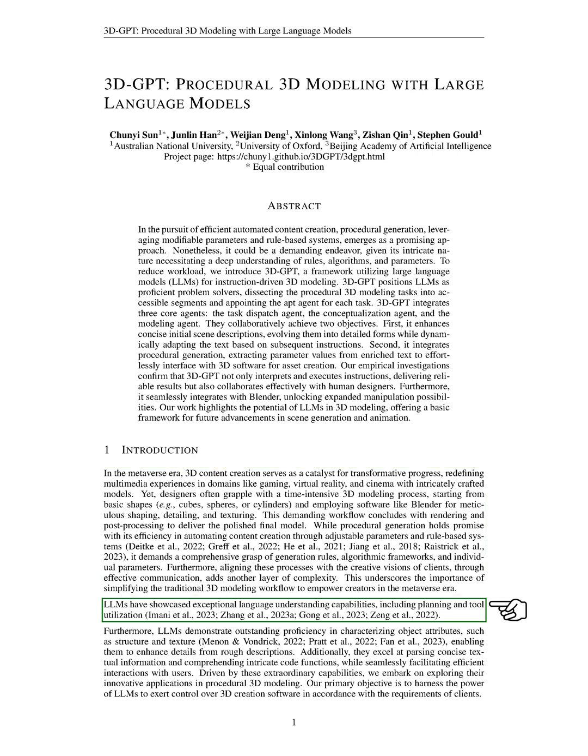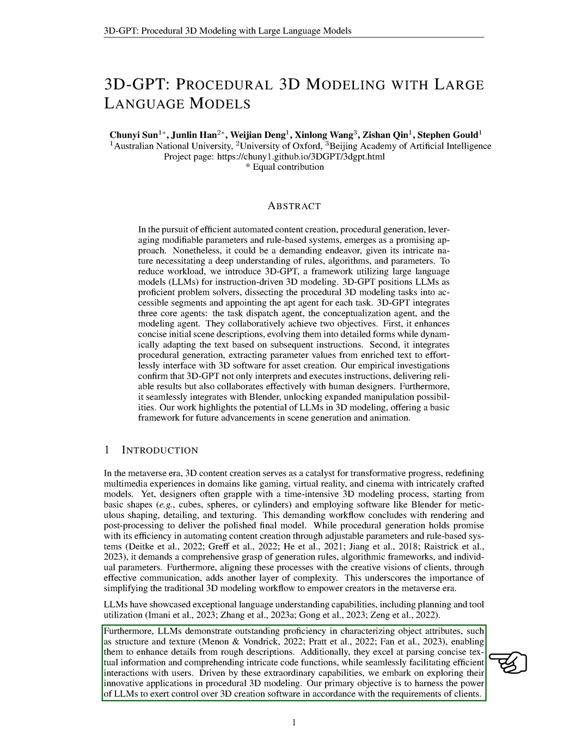Large language models, LLMs, have shown impressive language understanding capabilities, including planning and tool utilization. They are also highly proficient in characterizing object attributes such as structure and texture, which allows them to enhance details from rough descriptions. Additionally, they are excellent at parsing concise textual information and understanding complex code functions while efficiently interacting with users. Motivated by these remarkable capabilities, we aim to explore their innovative applications in procedural 3D modeling.